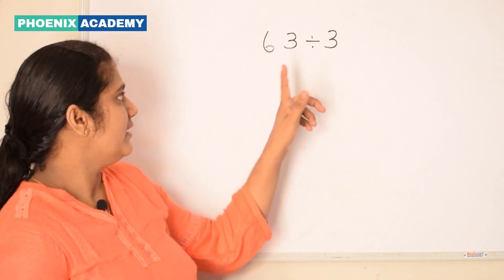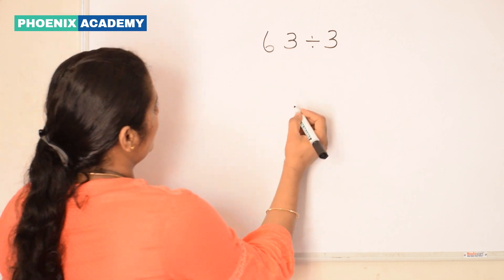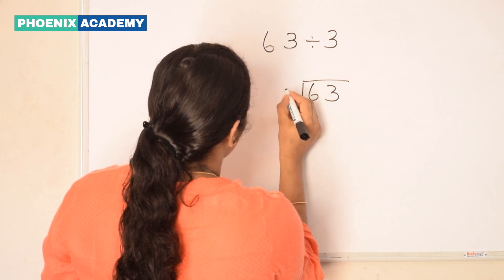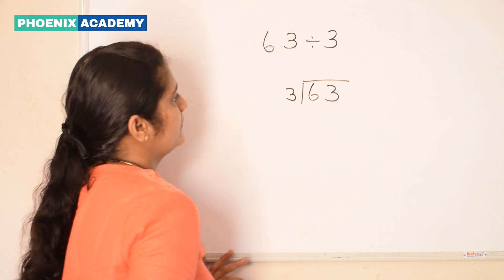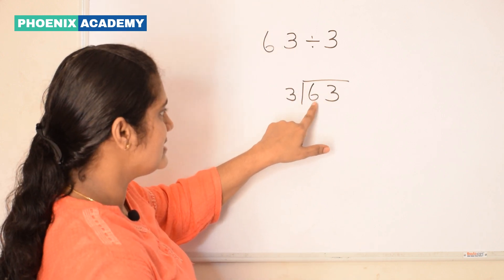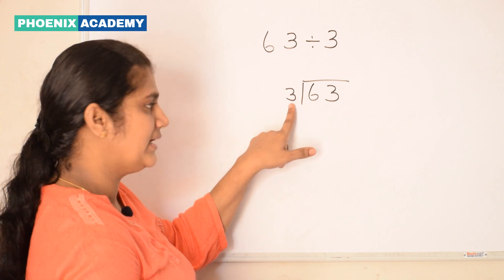Let us solve this also. 63 divided by 3. Let's arrange the numbers like this and check if the digit in tens place is equal to or greater than the divisor. Here 6 is greater than 3.